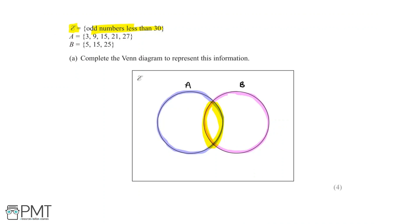Starting with set A: the number 3 does not fall in set B, so 3 is only in set A, which we write in the blue circle. Then we have 9 — again, only in set A, so we write it in the blue circle. Then we have 15. Looking at 15, it's in set A and also in set B. Since 15 is a shared value between set A and set B, it falls within the intersection of A and B, in the yellow shaded area in our diagram.